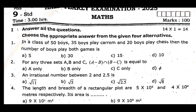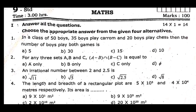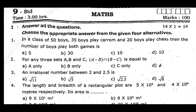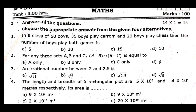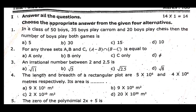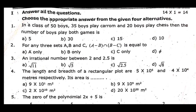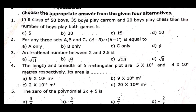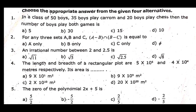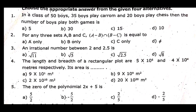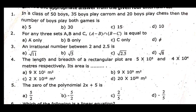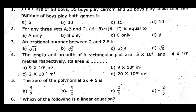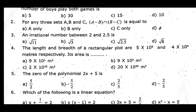Firstly, let's look at the choose. First question: In a class of 50 boys, 35 boys play carom and 20 boys play chess. Then the number of boys who play both games is dash. Second one: For any 3 sets A, B and C, A minus B intersection B minus C is equal to dash.